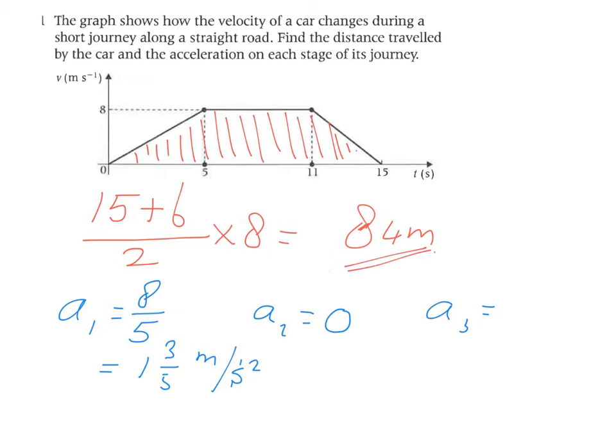And the third part, the line is going down, so there is a negative acceleration or a deceleration. The change in speed: 8 over the time taken from 11 to 15, so 4 seconds. Simplify that: 8 divided by 4. Minus 2 meters per second squared.